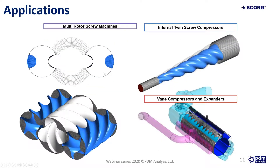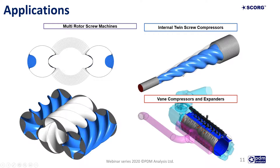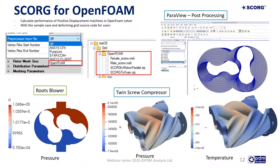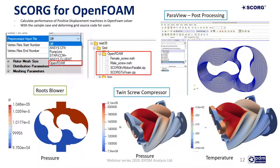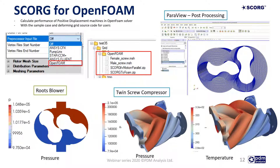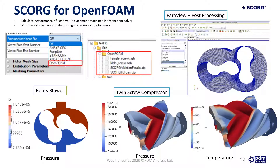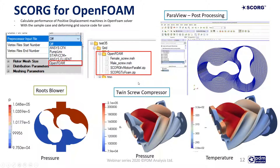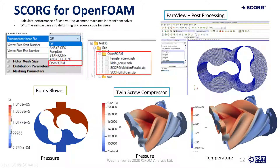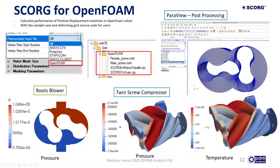A variety of configurations can be explored including multiple gate rotors, multiple screw machines, internally connected twin screw rotors, and different machine types such as vane compressors and expanders. The latest solver integrated in SCORG is OpenFOAM. The advantage of OpenFOAM is that it is open source and can be directly used with SCORG grids through user routines available with the solver. Examples presented include a Roots blower and twin screw compressors.